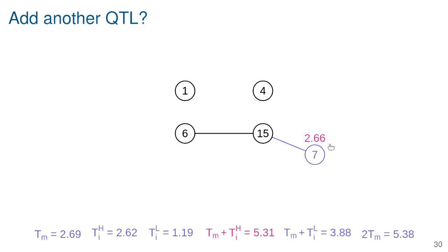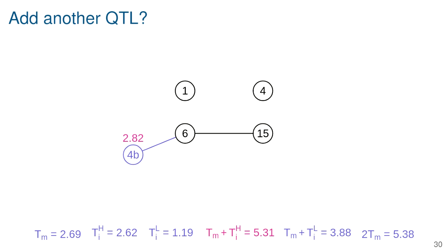Looking for an interactive locus, the next candidate is a locus on chromosome seven interacting with chromosome fifteen, but it would need to hit both the main-effect and interaction penalty — it isn't even close. There's also evidence for a second QTL on chromosome four interacting with chromosome six but it doesn't meet the threshold. The most interesting possibility is a pair of tightly linked loci on chromosome three — jointly adding them increases the LOD score by 4.6, but it would need to hit 5.4 before I'd add them, so I leave those off too.